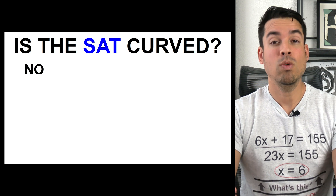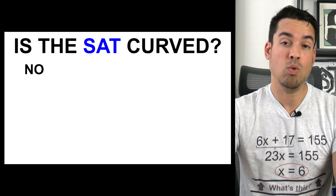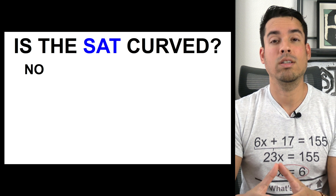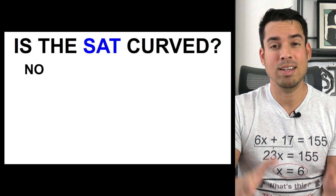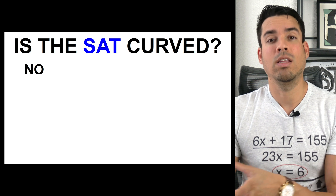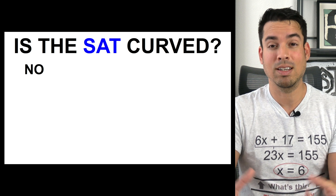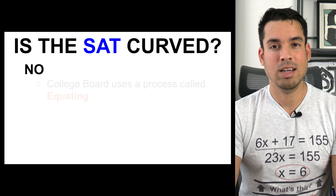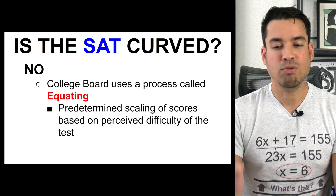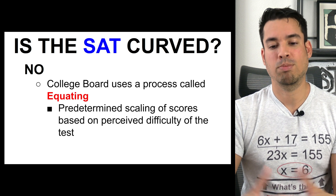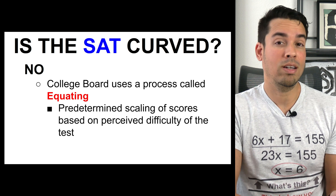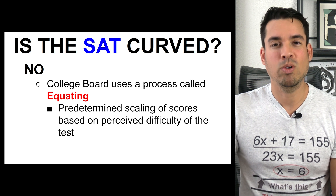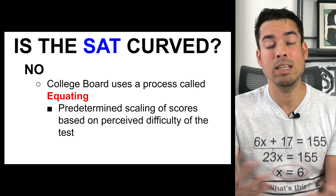Let's address whether the SAT has a curve. The short answer is no, but bear in mind that sometimes a certain number of correct answers will give you one score, and on later dates it can give you a different score. A curve is something applied after the fact based on how students do — that's not what happens on the SAT. The College Board instead uses a process called equating, which is a predetermined scaling of scores based on the perceived difficulty of the test, so that a score in 2019 can be accurately compared to a score in 2020.